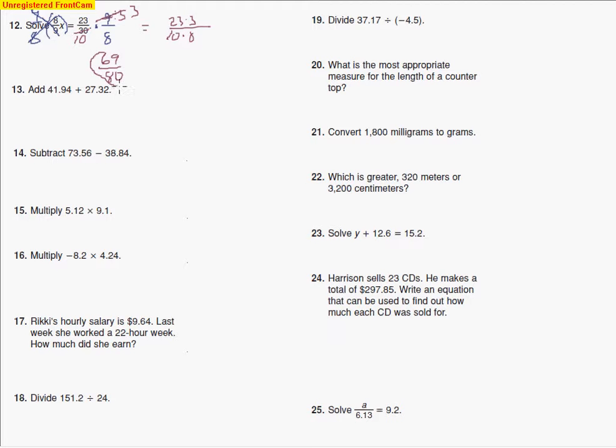Let's take a look at our next one. Here we are adding some decimals. I'm adding 41.94 and I'm adding 27.32. So I just line up decimals when I'm adding. I have 4 and 2 ends up making 6, 9 and 3 ends up making 12, carry a 1.